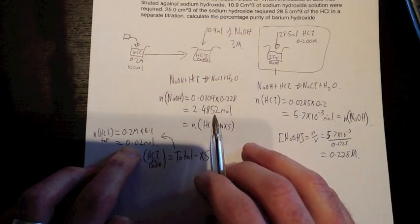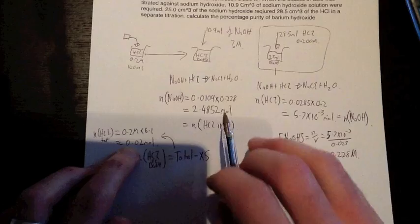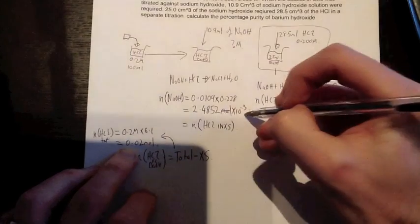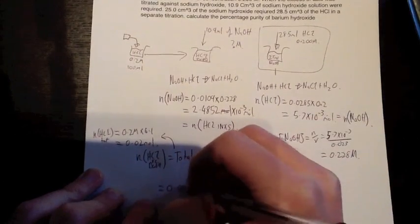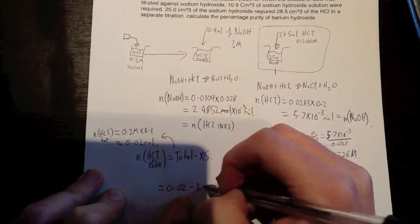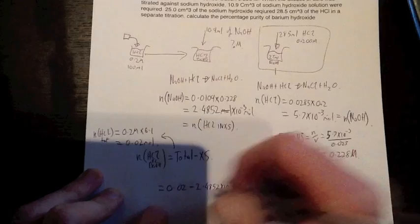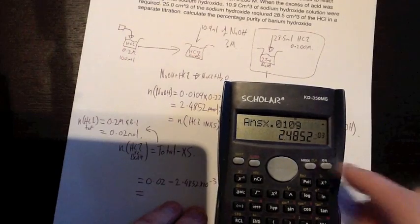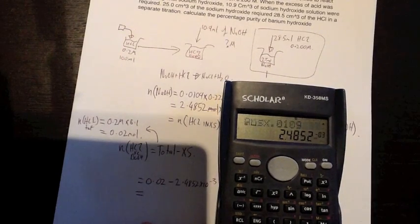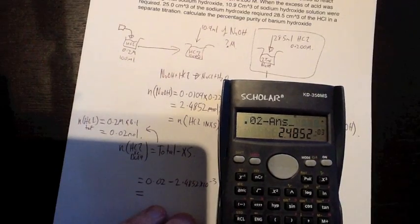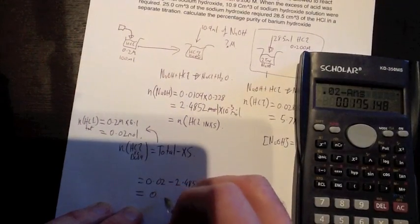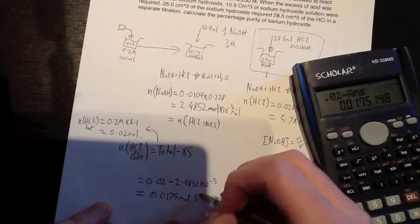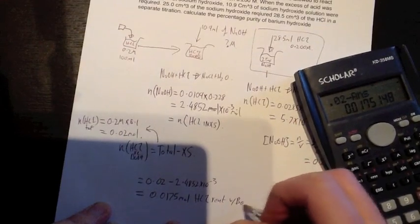Now our excess, which is, sorry, that's times 10 to the power of, sorry, this should be times 10 to the power of negative 3, is this mole. So we have 0.02 take away 2.4852 times 10 to the power of negative 3 equals, where are we? So that, I'll do 0.02 take away answer equals 0.0175 moles of HCl reacted with barium hydroxide.